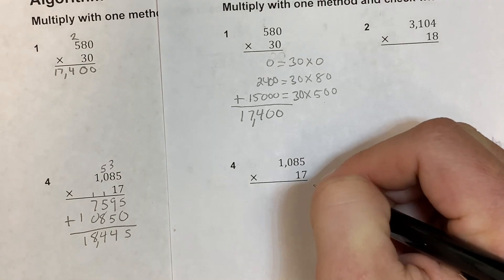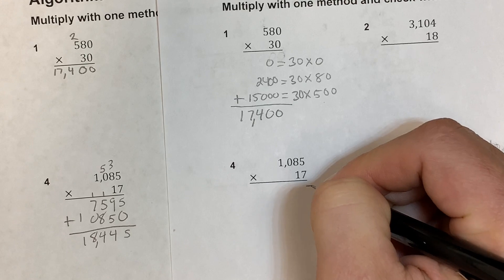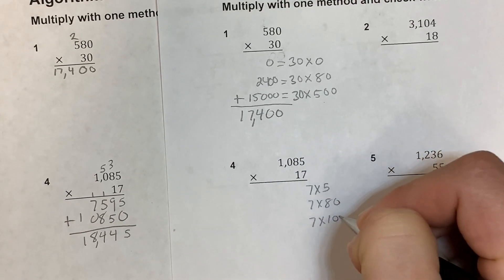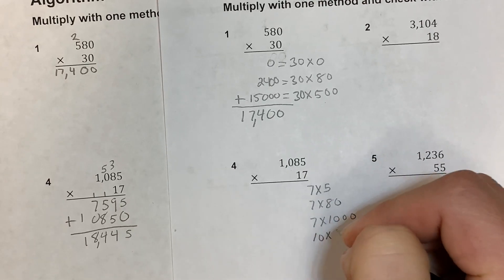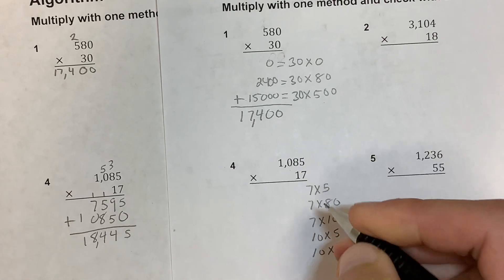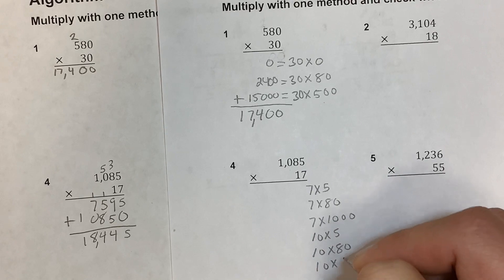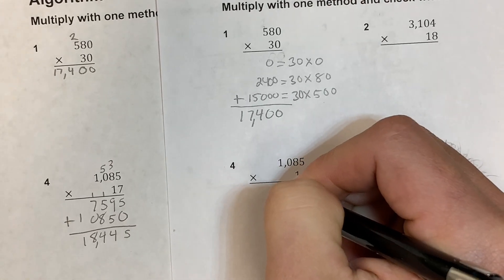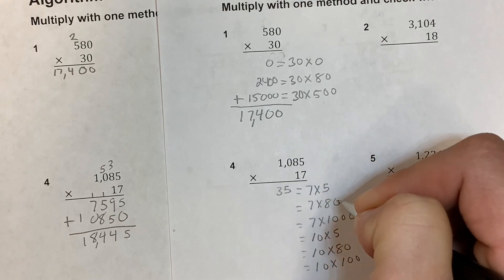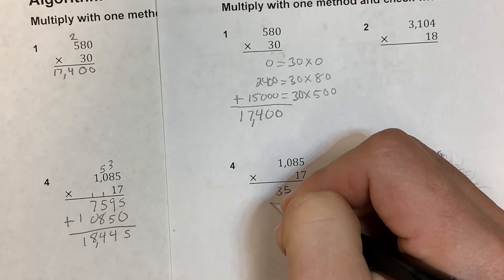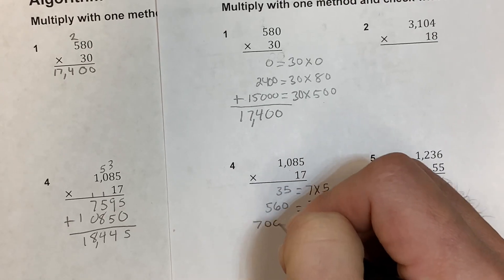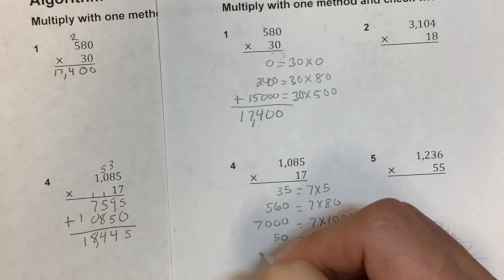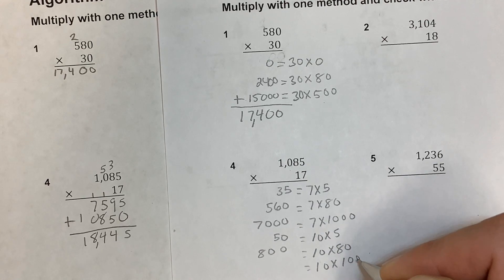Now doing that in partial product: we expand and multiply 7 times each part — 7 times 5 is 35, 7 times 80 is 560, 7 times 1,000 is 7,000. Then 10 times each part — 10 times 5 is 50, 10 times 80 is 800, 10 times 1,000 is 10,000. So 1,085 is multiplied by 7, and then 1,085 is multiplied by 10.